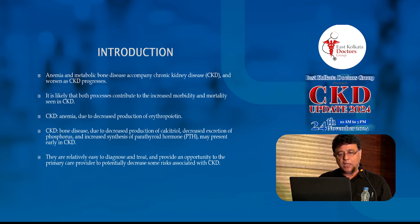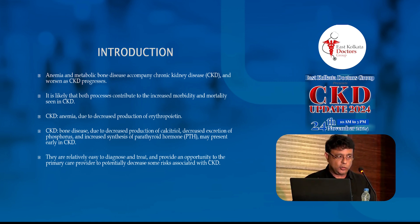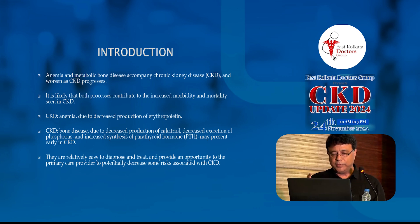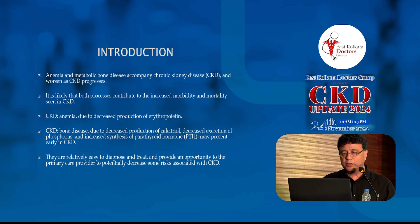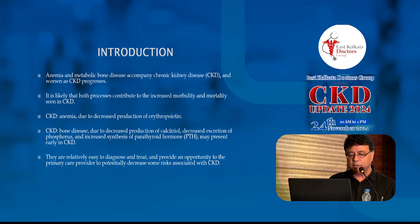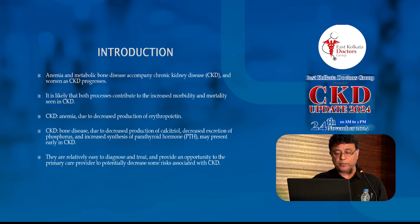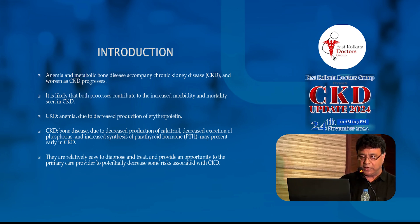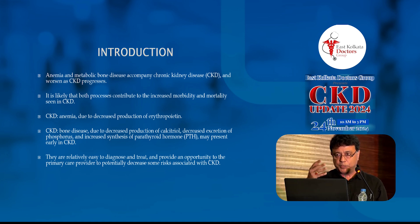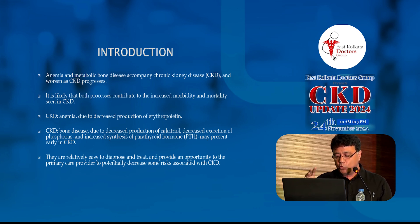Anemia is due to decreased production of erythropoietin, but that is a very simplistic view. Anemia is because of erythropoietin and hepcidin, which I'll come to later. Bone disease is due to decreased production of calcitriol, decreased excretion of phosphorus, and increased synthesis of parathormone. These can be seen in early CKD and are relatively easy to diagnose and treat, providing an opportunity for the primary care provider to potentially decrease some risk associated with CKD. At GFR 60, 50, or 40, if you treat early you can save a lot of lives and reduce mortality and morbidity.